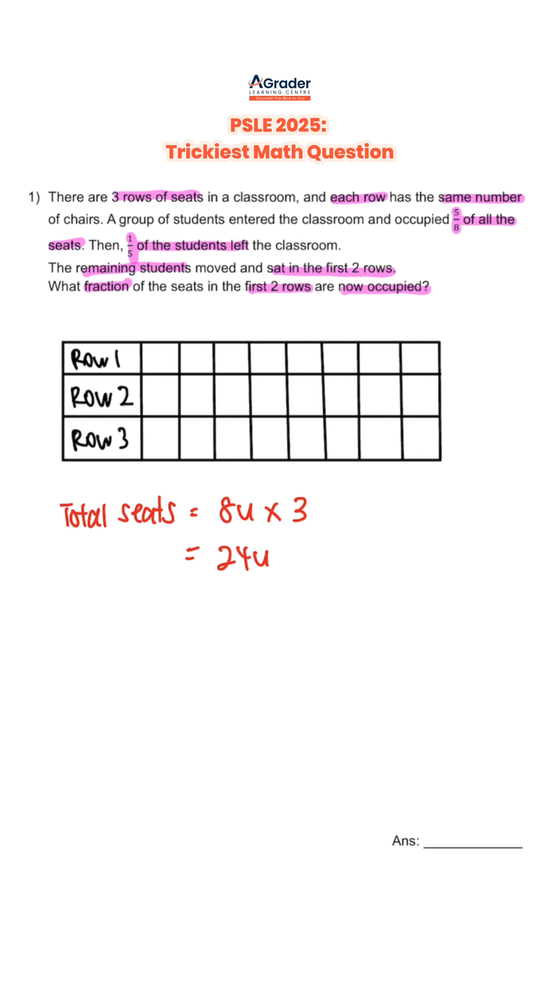We know that at the start, 5 over 8 of all the seats were occupied. That would be our next step. We are going to find the seats that were occupied originally. This is 5 over 8 of the total. So we use 5 over 8 times the total units, 24, and this gives us 15 units. This means that at first, there were 15 units that were occupied.